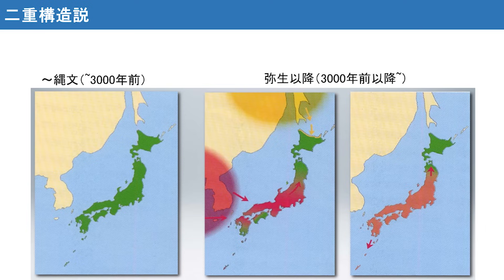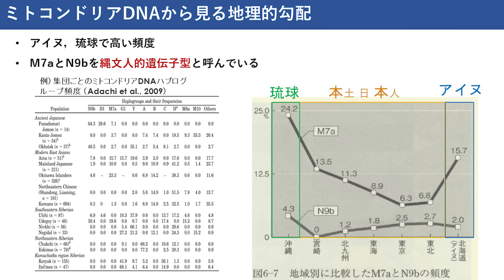弥生時代に入りますと、朝鮮半島から農耕を伴った集団が北部九州に流入し混血を開始します。混血は東進あるいは南進することによって進み、最終的に日本列島で混血した集団が広がります。北のアイヌと南の琉球の人々は混血が少ないということが示されています。このような形態学的な研究に基づく埴原の二重構造説はDNAからも支持されています。こちらはミトコンドリアDNAの研究成果です。